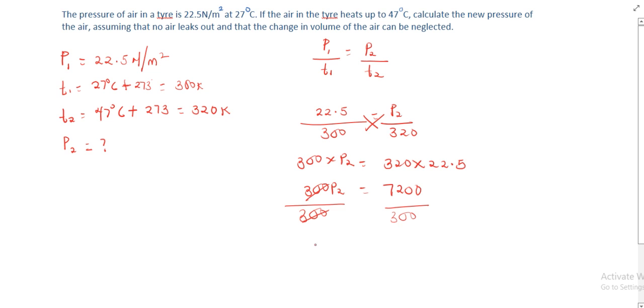So for P2 divided by the coefficient of P2, which is 300, this will cancel out. Our P2 will equal 7200 divided by 300, which gives us 24 newton per meter squared.